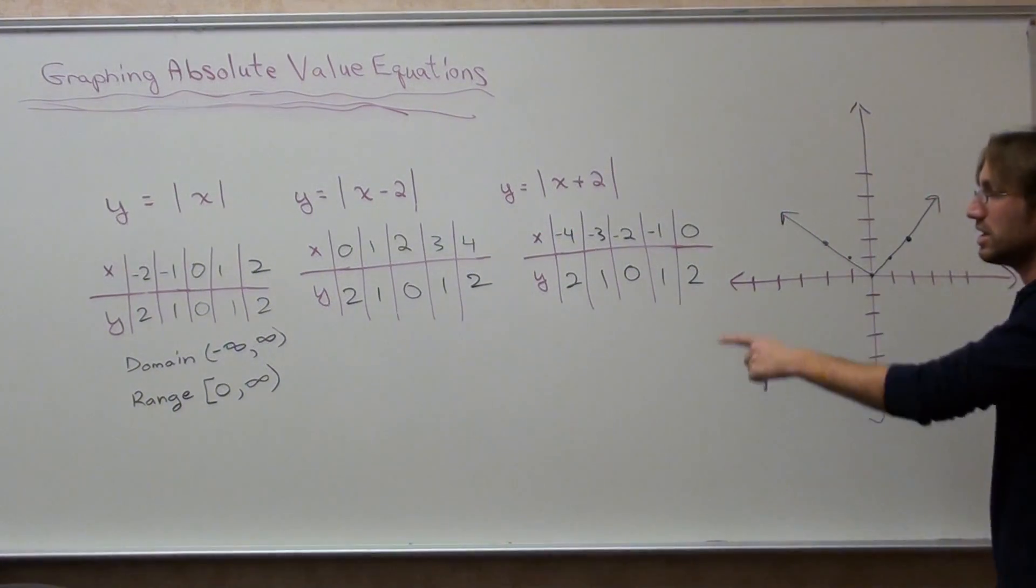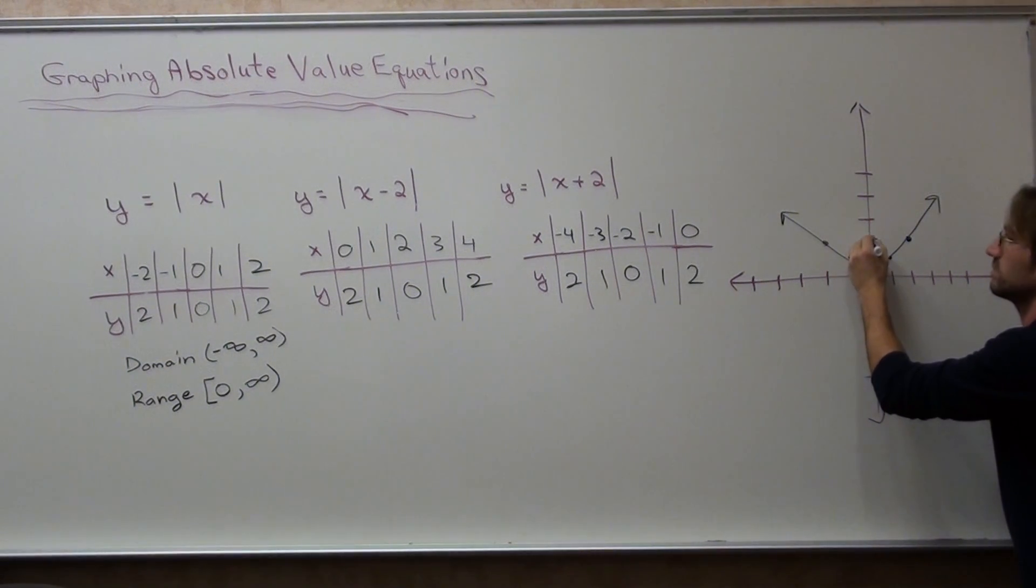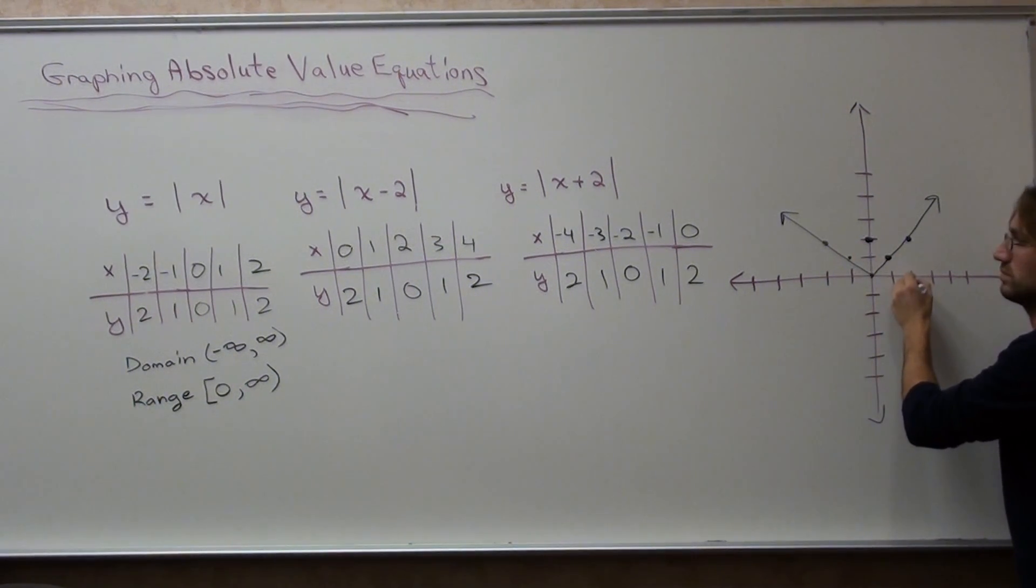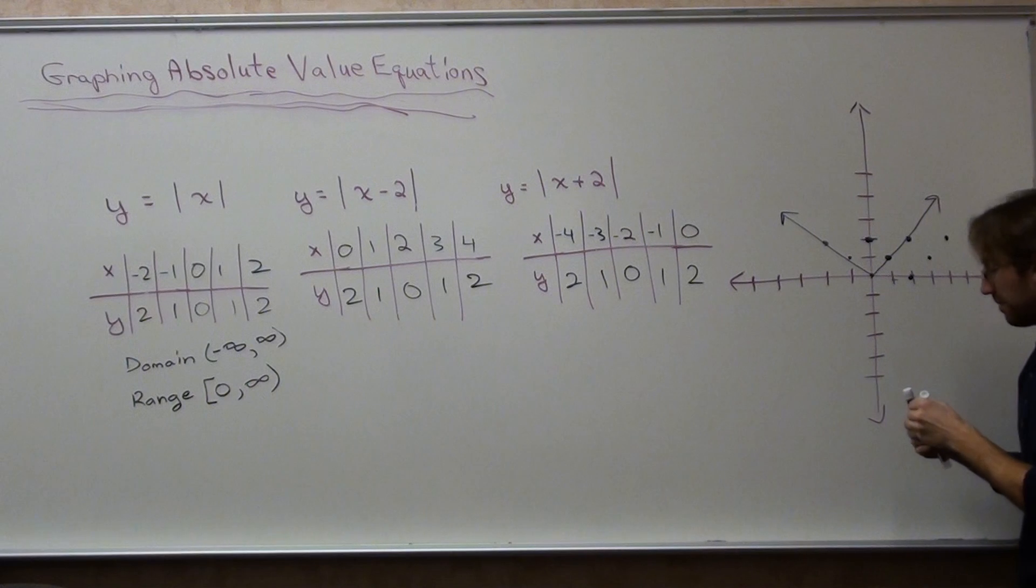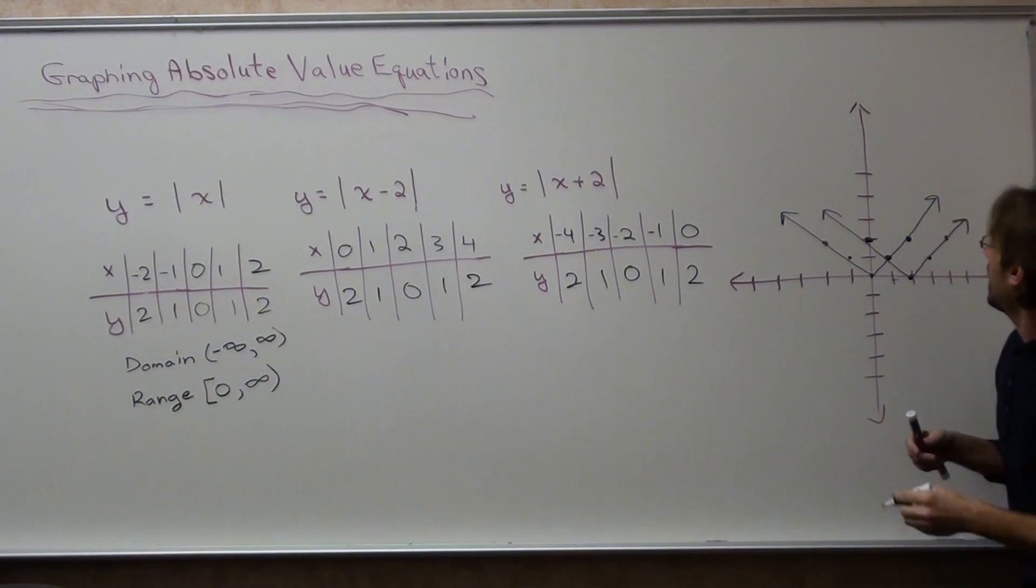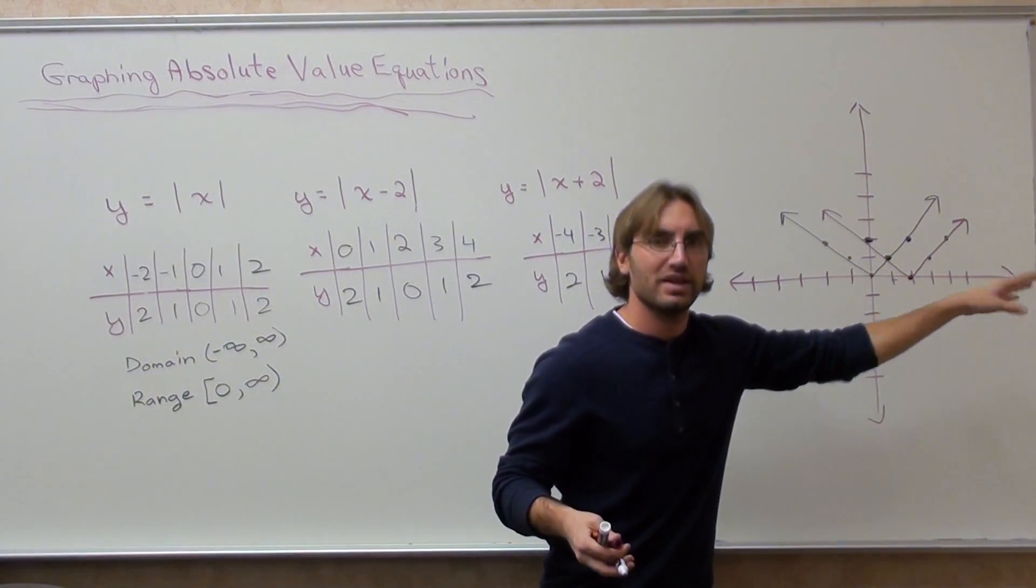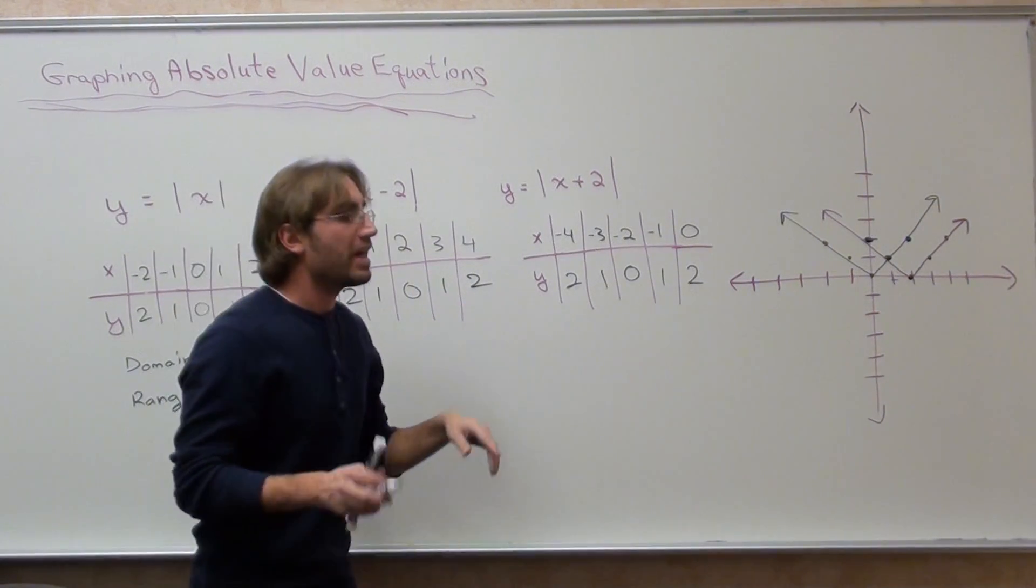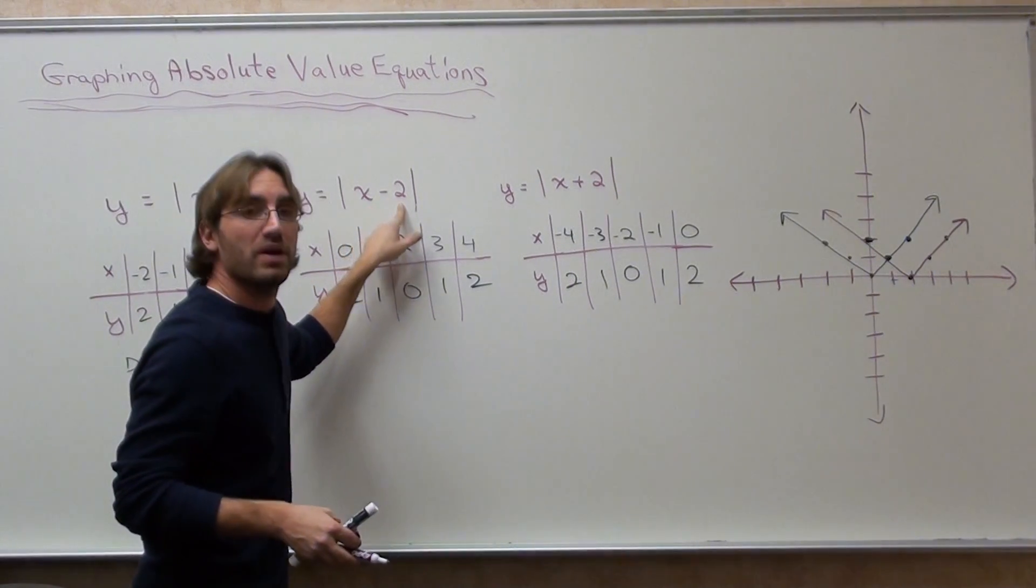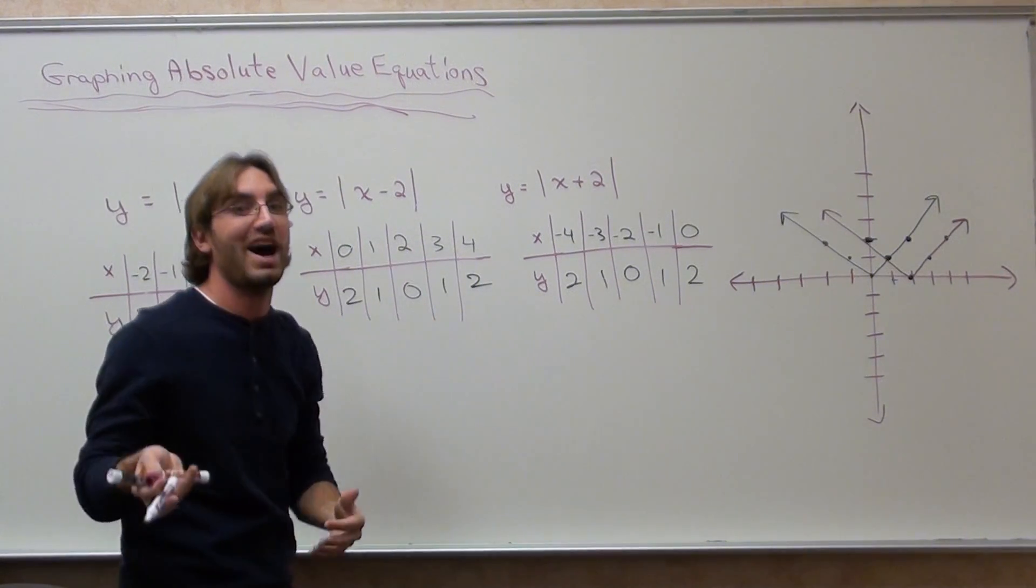Now I'm going to graph the next one. Zero comma two. And what happened is, it's a V, except it got pushed to the right. This one got pushed to the right. It's funny, actually. If it's negative two, then it's going to go two to the right. If it's positive two, then it's going to go two to the left. It actually goes in the opposite direction of the number.